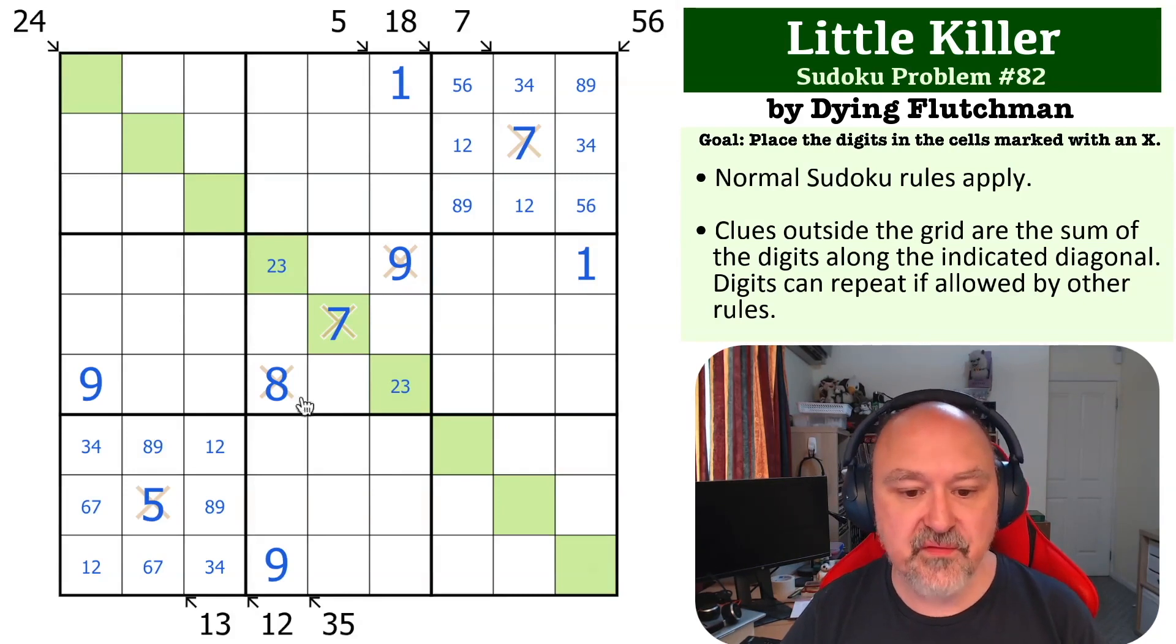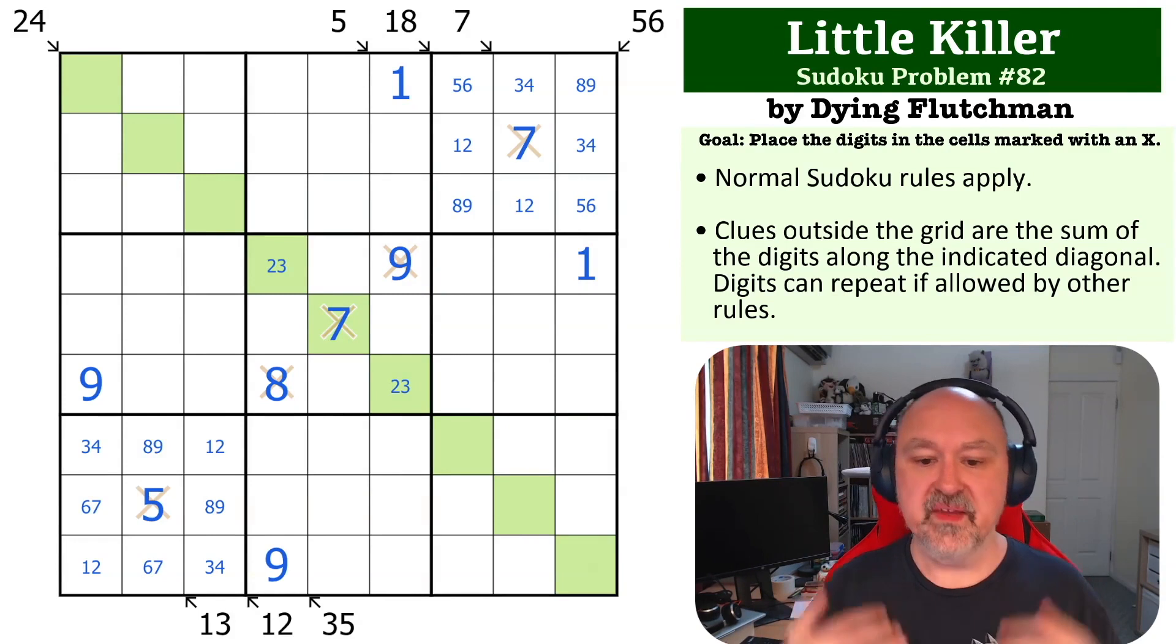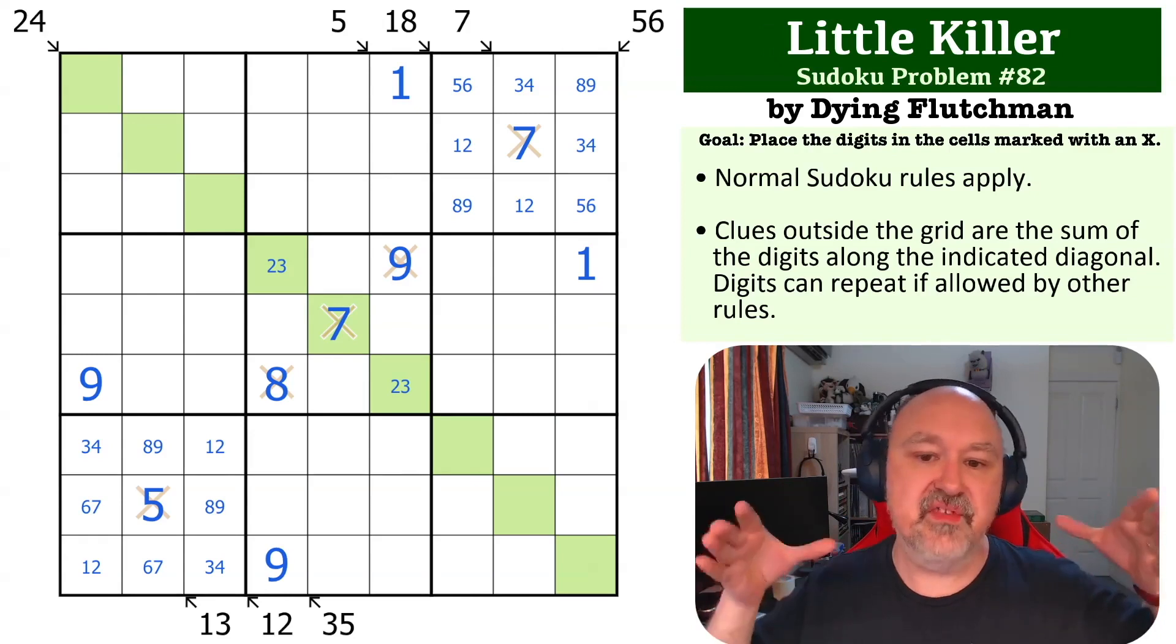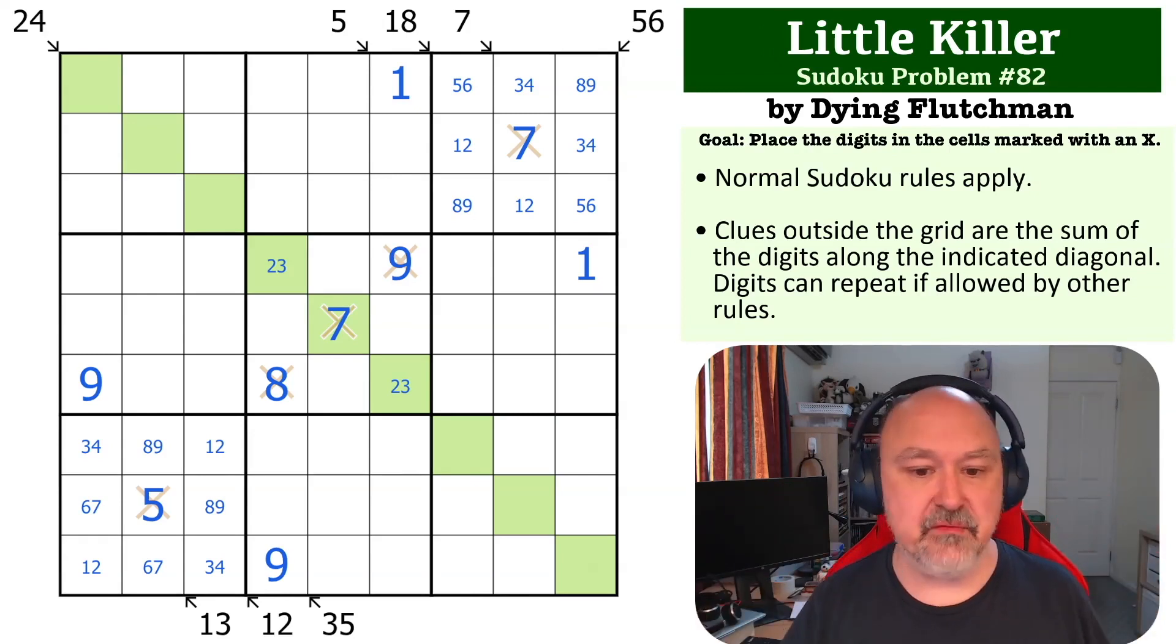Because you get your 5, 8, 7, 9, and 7. I really like this one. It is using a whole bunch of extreme Little Killer clues to give you stuff that isn't immediately obvious.